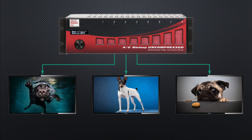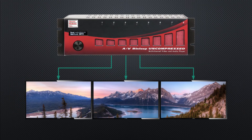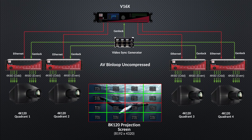Synchronization is also a breeze. Channels can be played independently or grouped together for perfect pixel-accurate synchronization between one another. Through the magic of the V16X Show Controller and Video Genlock, multiple bin loops can even be synchronized with one another to achieve massive resolutions. This really comes in handy for edge-blended projection or LED wall systems that can easily hit 8K resolutions and beyond. Why spend the extra money for all those pixels if you're not going to take advantage of them?